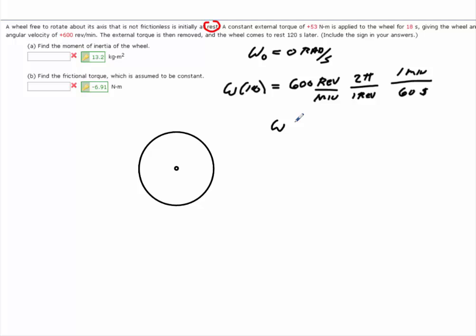and you'll get omega at 18 is equal to 62.83 radians per second.